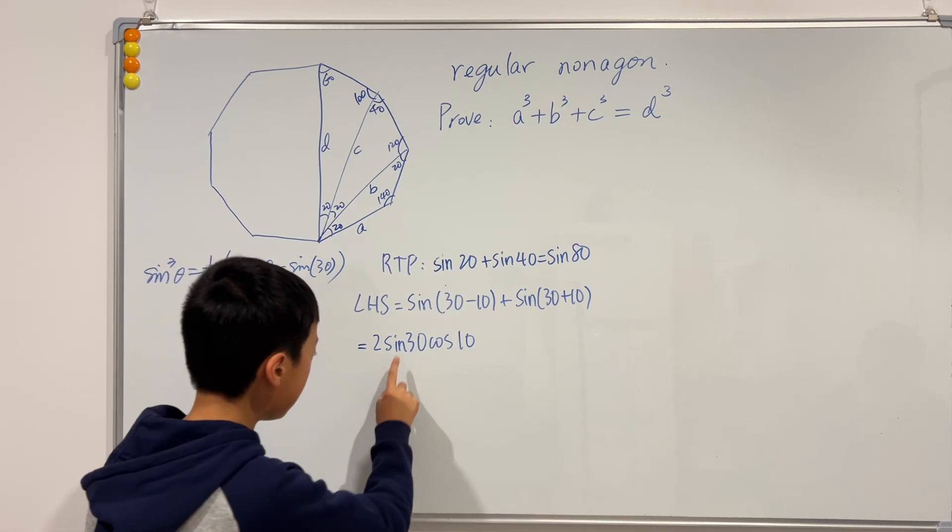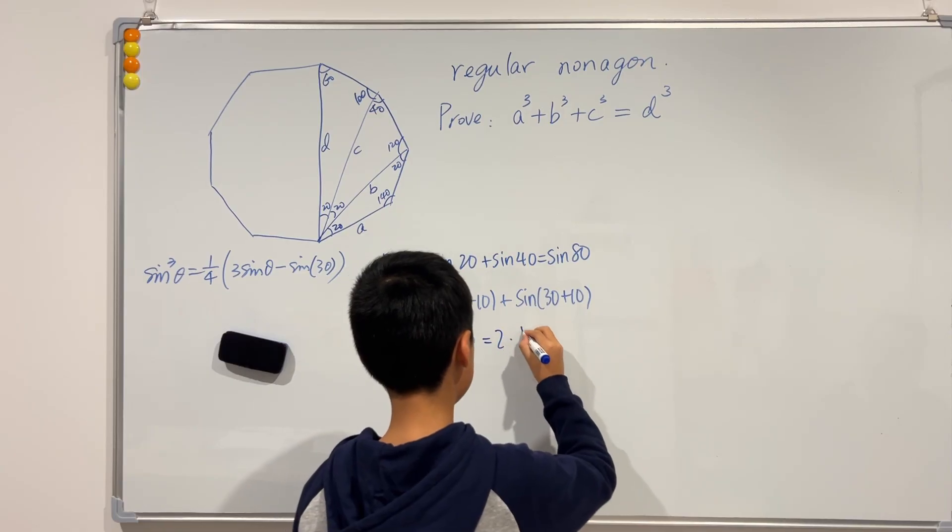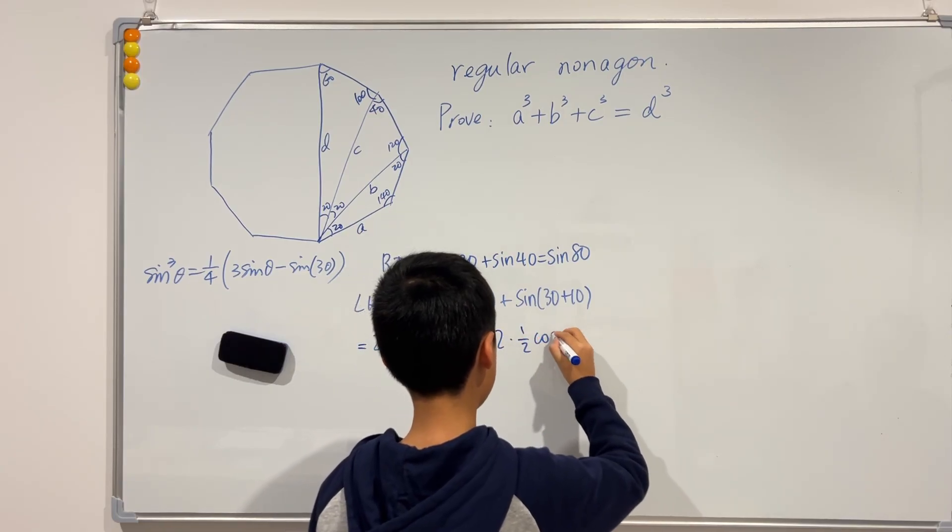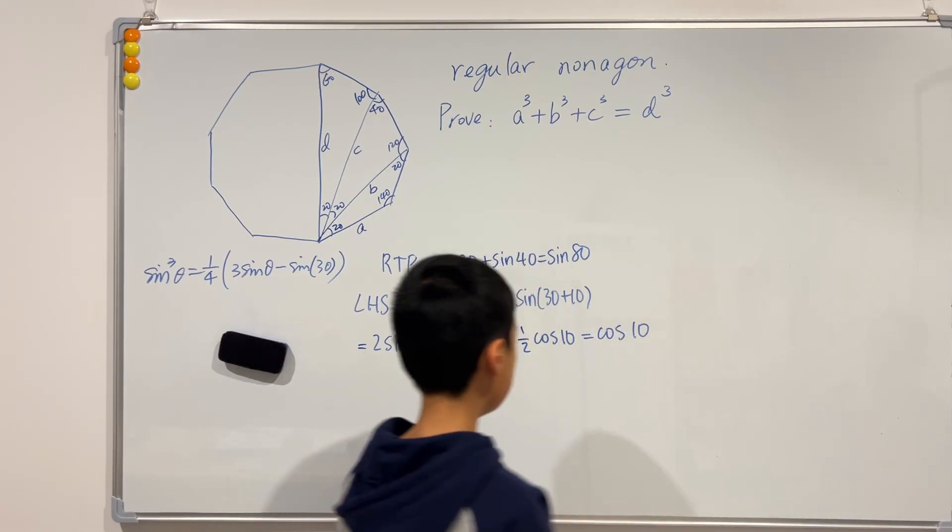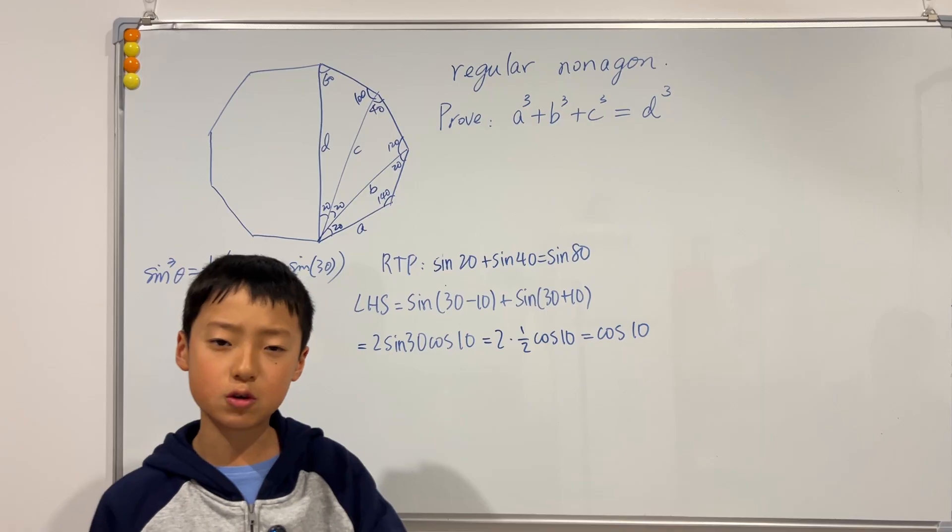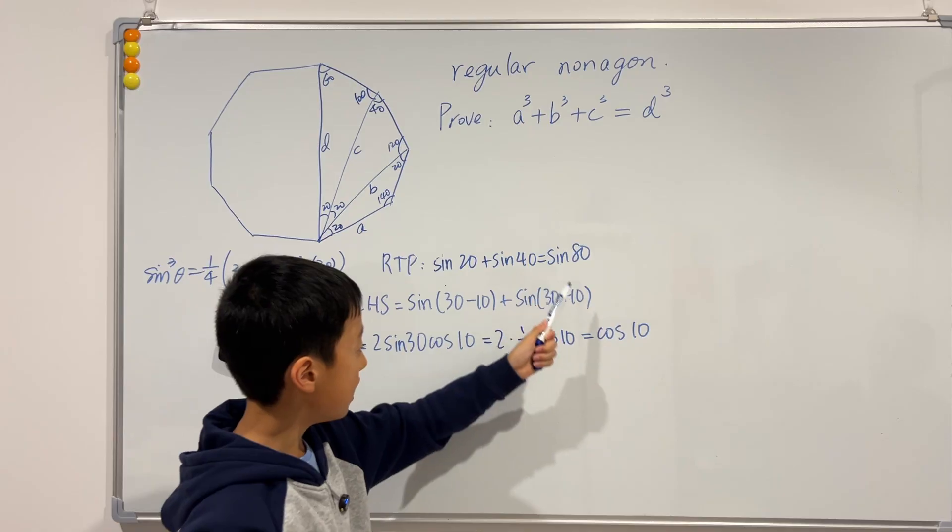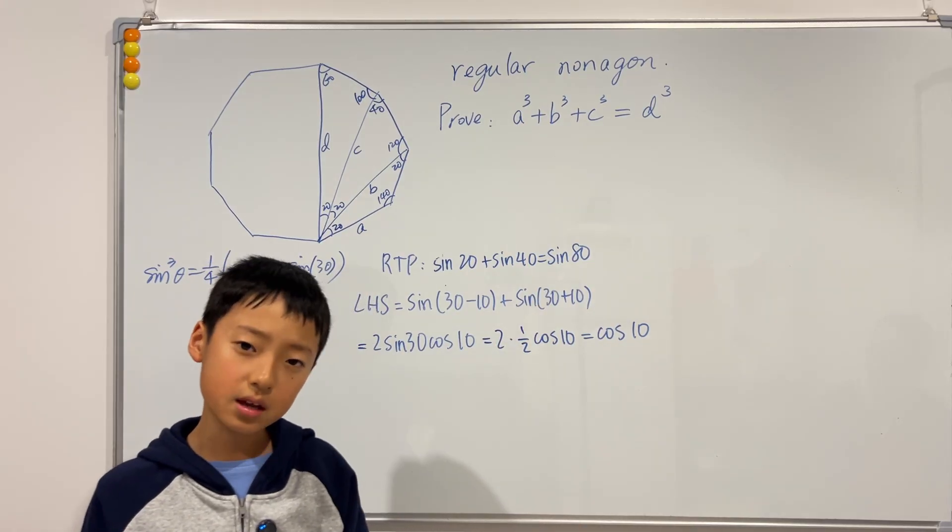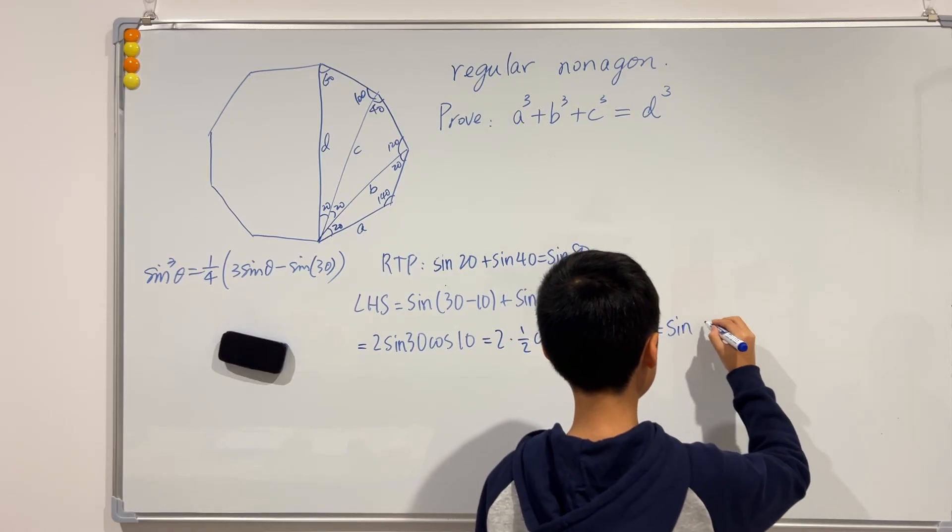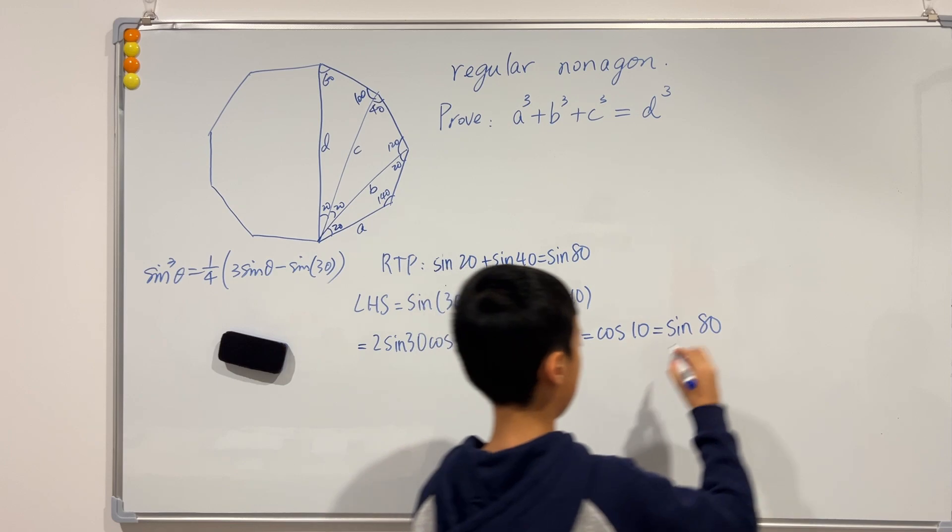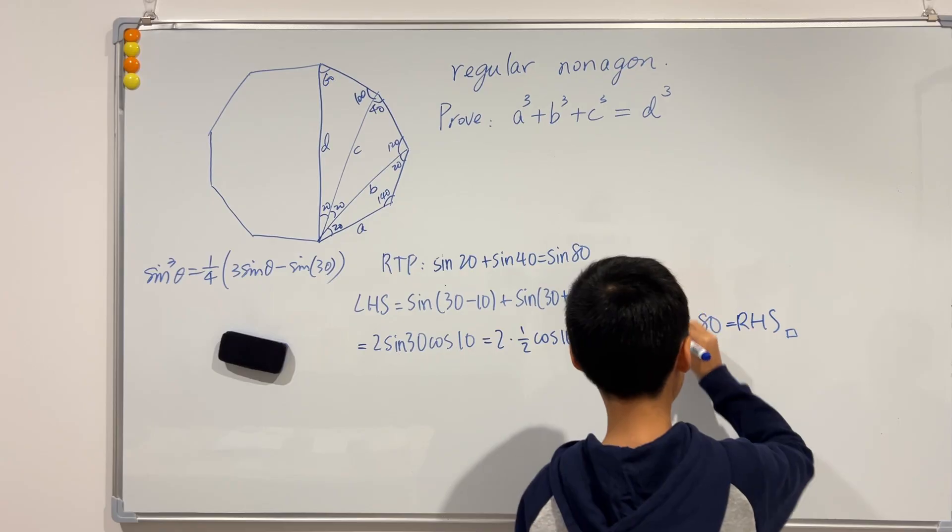Okay, and we know that sine of 30 is just one-half, right? So this is equal to 2 times one-half cosine of 10, which is just cosine of 10. And we know that 10 plus 80 equals to 90, right, that's a right angle. So this and that are actually complementary. What does that mean? It means that they are equal. This is equal to sine of 80, and look, that is just the right-hand side. So we've proved it.